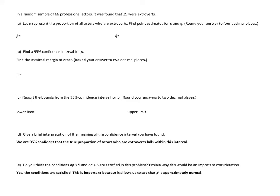Hey guys, let's look at estimating a proportion in the binomial distribution. Let P represent the proportion of all actors who are extroverts. Find point estimates for P and Q. Round your answers to four decimal places.